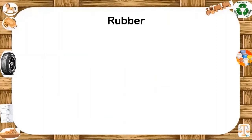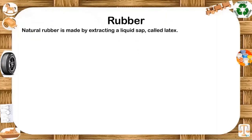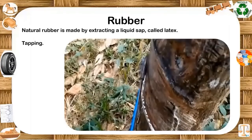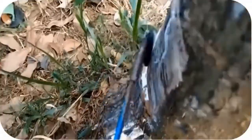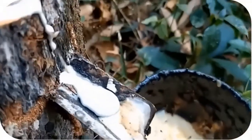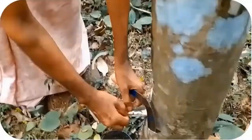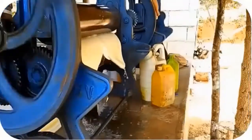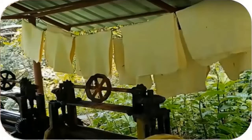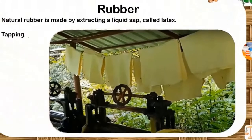Natural rubber is made by extracting a liquid sap called latex from certain types of trees. Latex is gathered by making a cut in the bark and collecting the runny sap in cups — this process is called tapping. Acid is then added to the mix to extract the rubber in a process called coagulation, which can take about 12 hours. This mixture is then passed through rollers to remove excess water. Once complete, the layers of rubber are hung over racks, smokehouses or left to air dry. Several days later, they will then be folded into bales ready for processing.